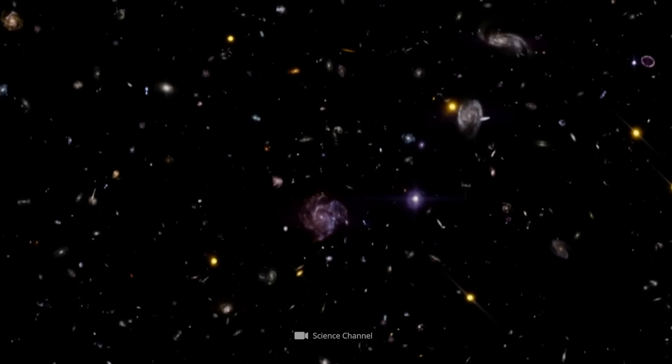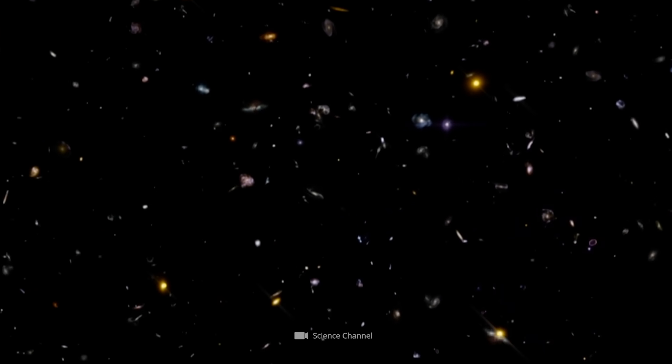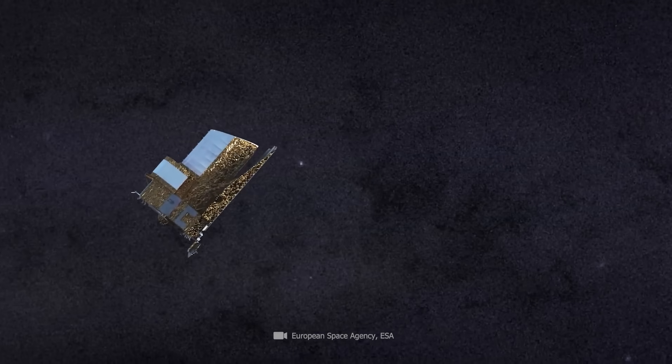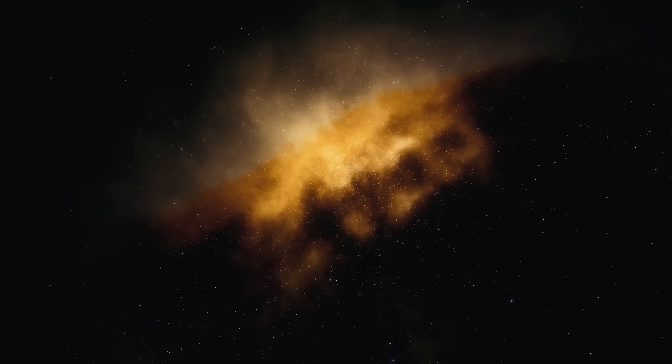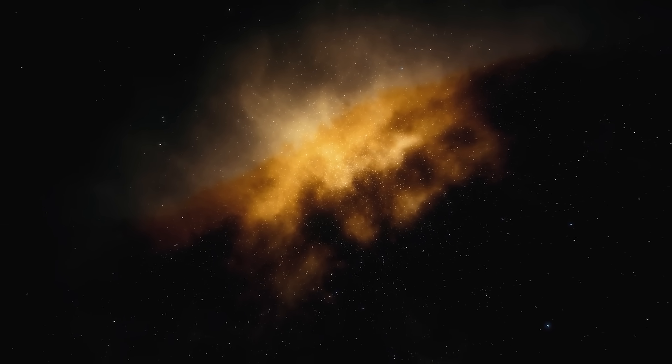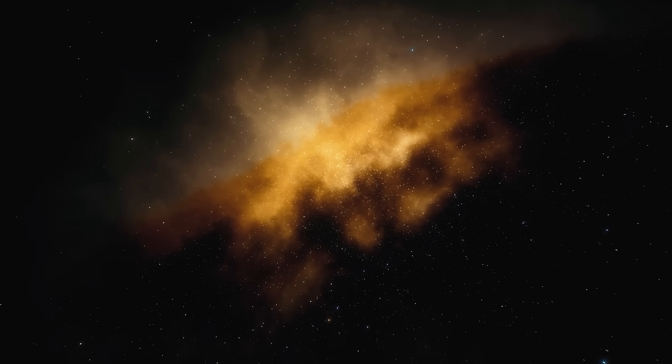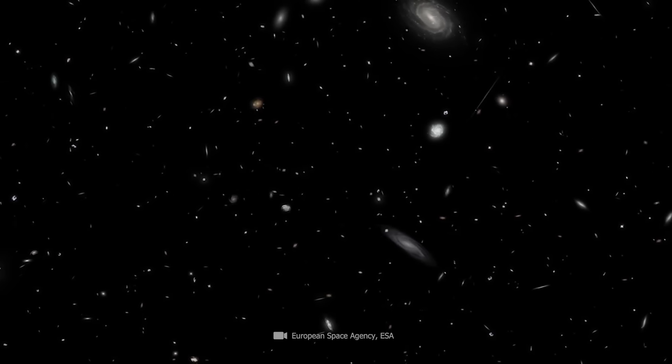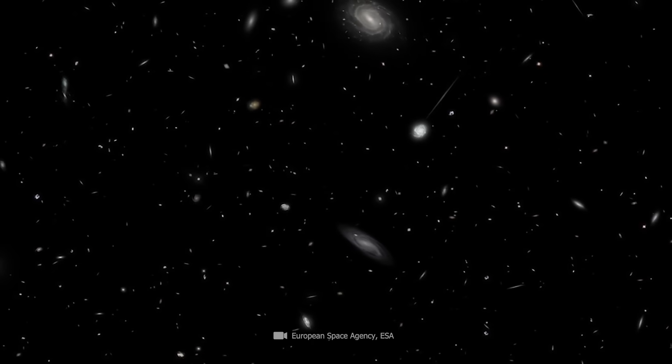What Euclid can't do is look as far back in time as James Webb. Euclid will scan and map the universe at a radius of 10 billion light years. That means the telescope won't look anywhere near the supposed Big Bang 13.8 billion years ago. Instead, ESA's Space Telescope will give us a perfect 3D map of the universe.